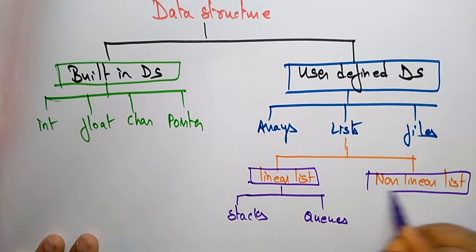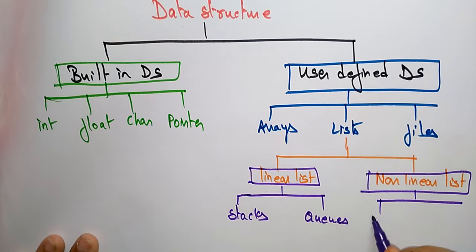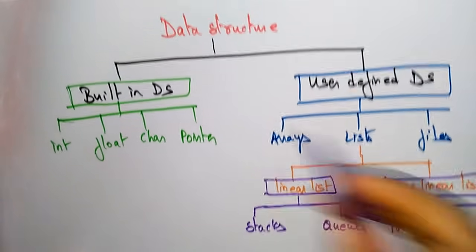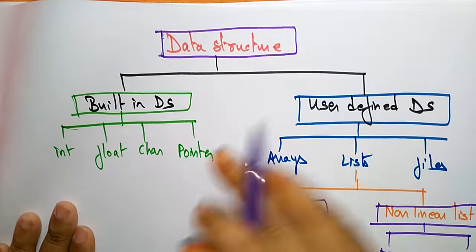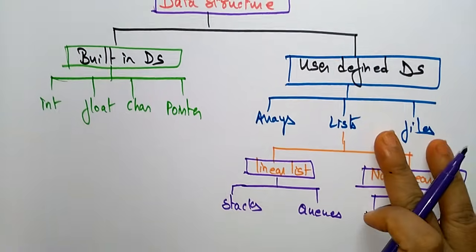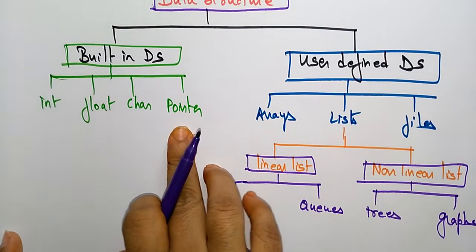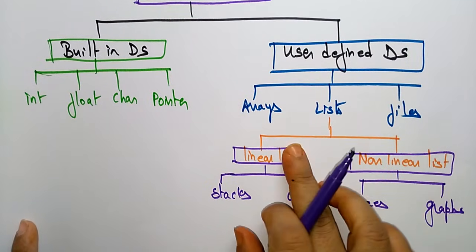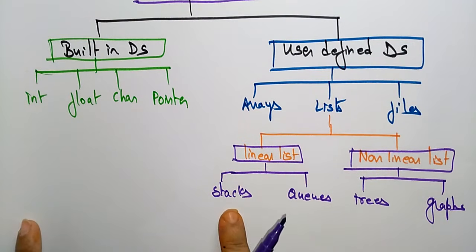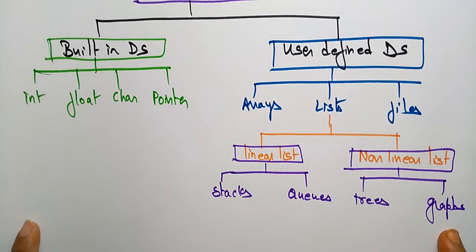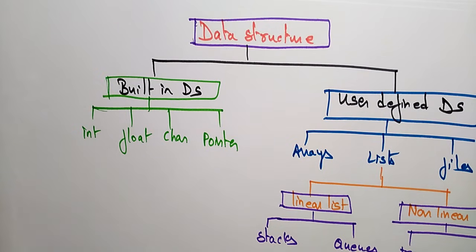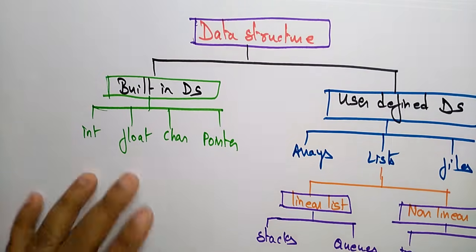Linear lists are nothing but stacks and queues, whereas non-linear lists are trees and graphs. So a data structure may be built-in — such as integer, float, character, and pointer — or user-defined, such as arrays, lists, and files. This has been an introduction to data structures, covering what a data structure is, how to select one, and the different types.